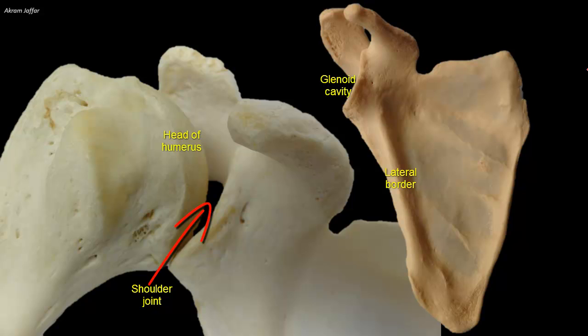There is a marked disproportion between the large head of the humerus, which forms the ball, and the small shallow glenoid fossa, which forms the socket of the ball-and-socket joint. The socket only accepts about one-third of the humeral head. The shoulder joint is therefore very mobile but easily dislocated because of this disproportion.